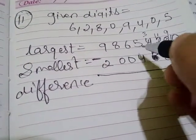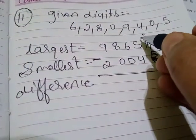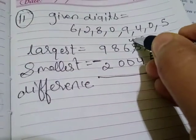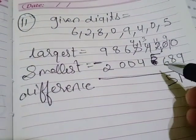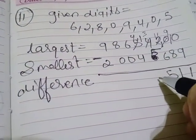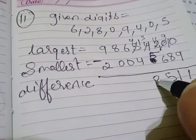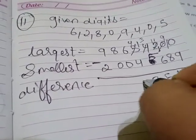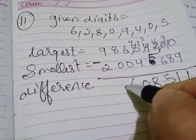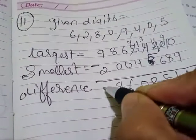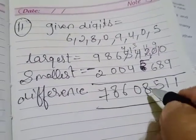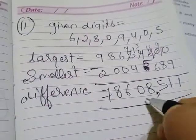Then 3 minus 5 is not possible, so it becomes 13 and this becomes 4. 13 minus 5 will be 8, and 4 minus 4 is 0. So the digits are 0, 6, 8 — and 9 minus 2 is 7. This is the difference: 7, 8, 6, 0.